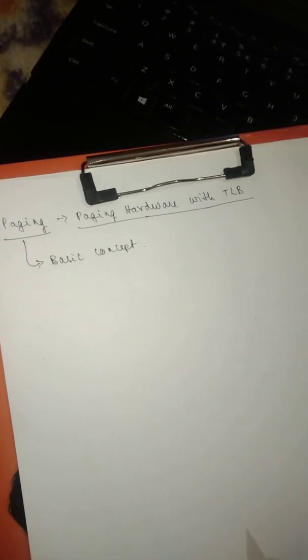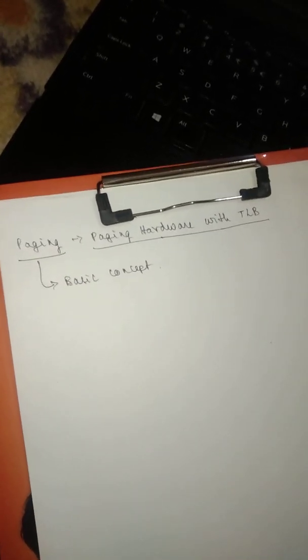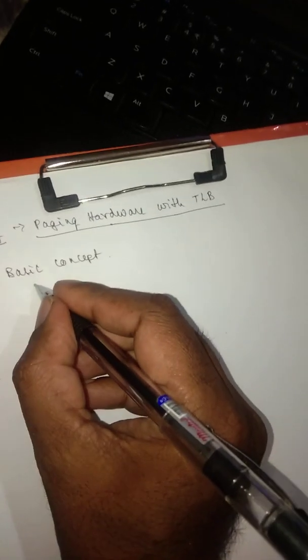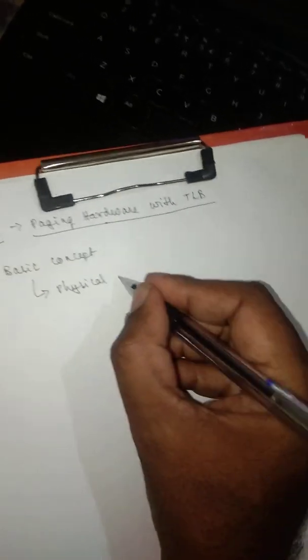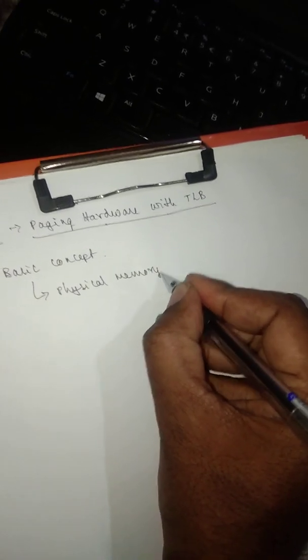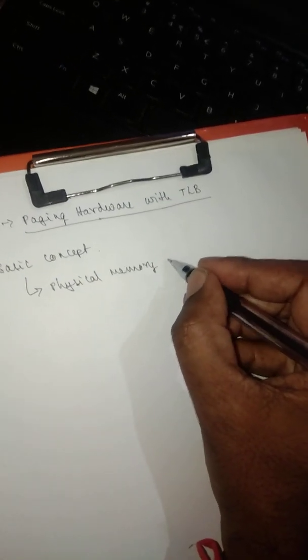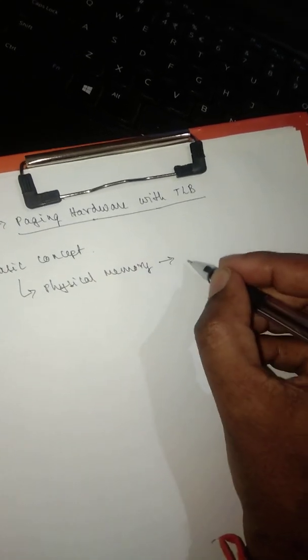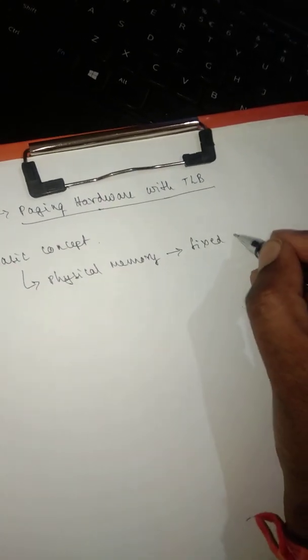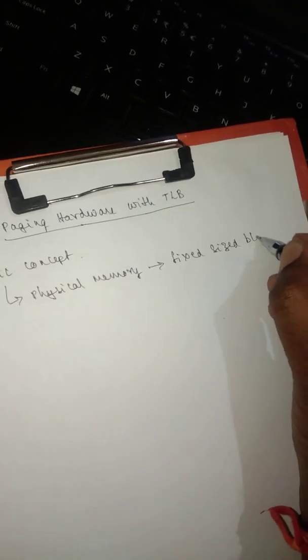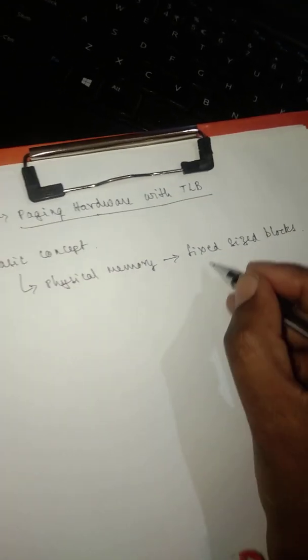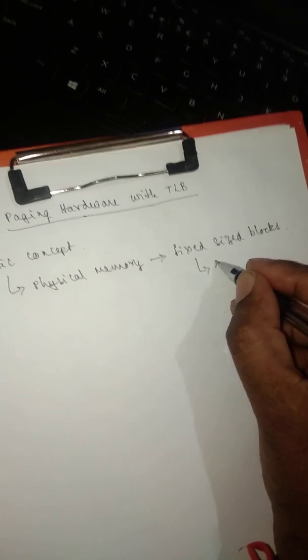Welcome all. Today we'll be discussing paging hardware with TLB. The basic concept is that physical memory is divided into fixed-size blocks called frames, and the logical memory is divided into fixed-size blocks called pages.